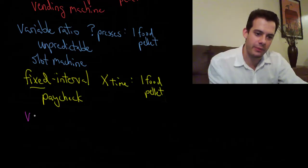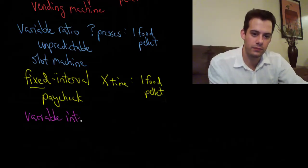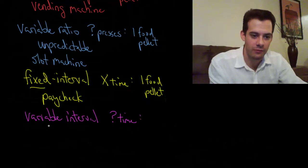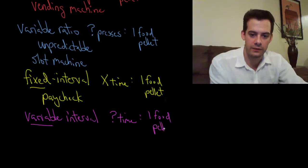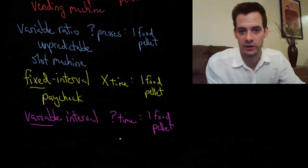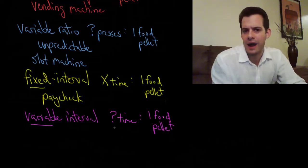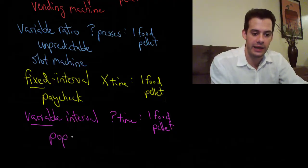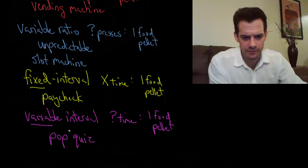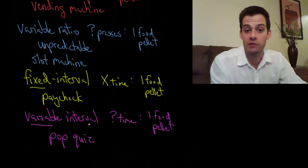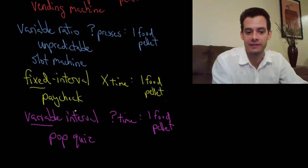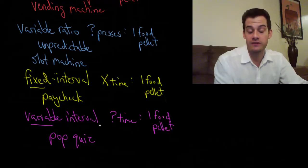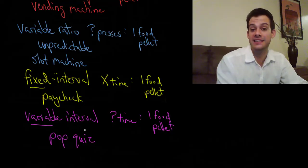Lastly, in a variable interval schedule, some unknown and always-changing unit of time is associated with getting the food pellet. You don't know how much time passes before the next one is available, and you still have to press the lever to get it. A human example would be a pop quiz — you never know when it's coming. You could have two quizzes in a row or two weeks between them. So you'd probably study a little bit every day to be prepared.